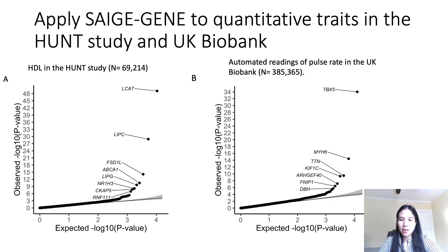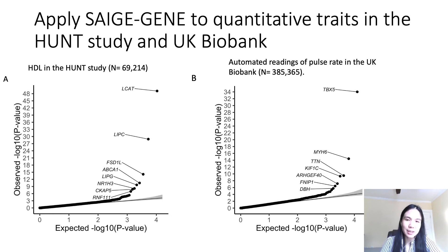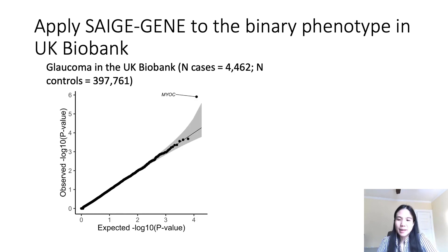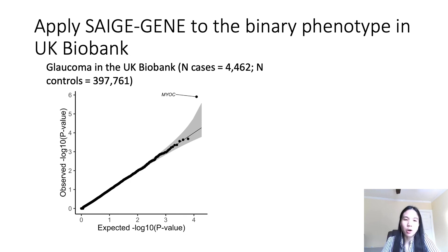We have applied SAGE gene to quantitative traits for exome-wide association tests in two biobanks: the HUNT study from Norway with heavy sample relatedness, as figure A shows, and the UK Biobank, as figure B shows. As expected, we identified several well-known genes for these traits. We have also applied SAGE gene to binary traits for exome-wide association tests in the UK Biobank. The QQ plot for glaucoma is shown as an example, with the top gene being MYOC, a gene well-known to be associated with the risk of glaucoma.